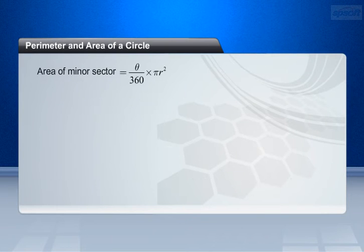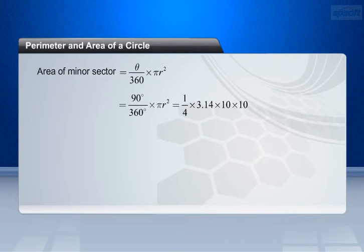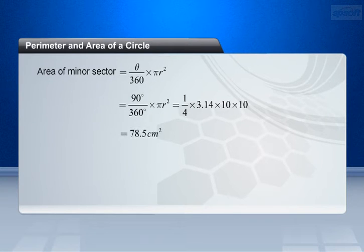Area of minor sector OAB equals theta by 360 into pi r square. Equals 90 degrees by 360 degrees into pi r square. Equals 1 by 4 into 3.14 into 10 into 10. Equals 78.5 cm square.